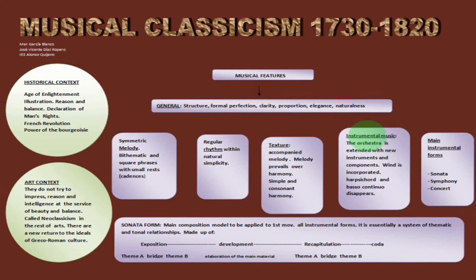Instrumental music is prominent. The orchestra is extended with new instruments and components. Wind is incorporated. The harpsichord and the basso continuo disappear. The main instrumental forms were three: the sonata, the symphony, and the concerto.